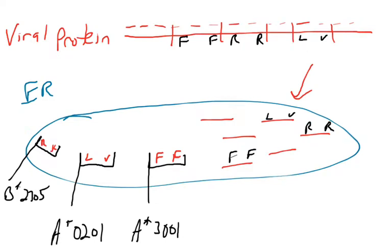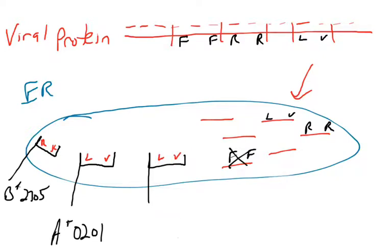Going back to the ER: being heterozygous is good because you can load lots of different peptides, while being homozygous is not as advantageous. A heterozygous person with two different versions of HLA-A can present different peptides. But if you're homozygous for 0201, you can only present peptides with leucine and valine anchor residues — you can't present peptides with phenylalanine anchor residues. The number of peptides you can present is diminished, and that diminishes the ability of your immune system to recognize an infection.